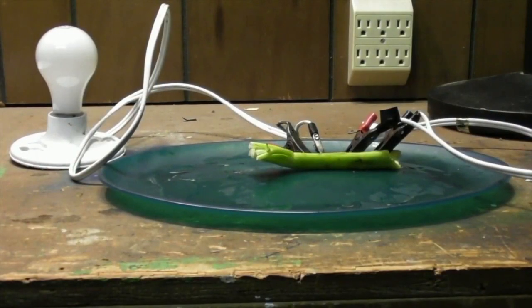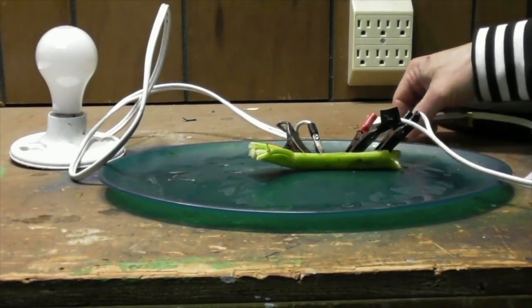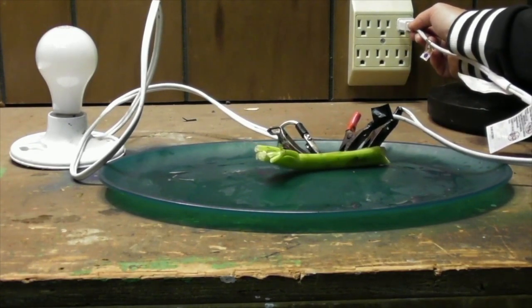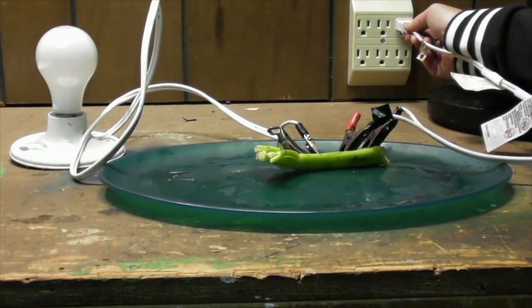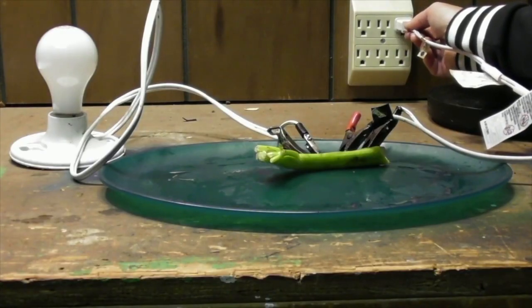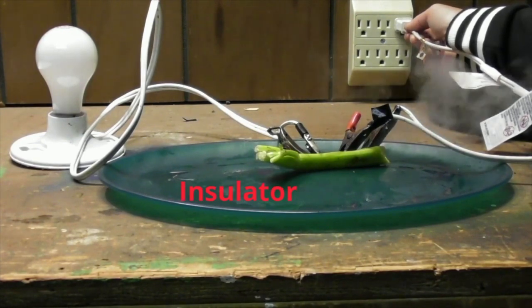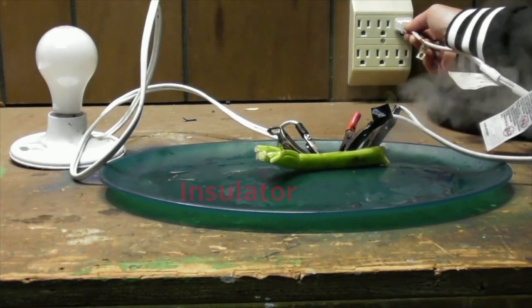How about celery? It kind of tastes salty. Maybe it has enough salt in there. I plug it in. And well, you can see for yourself. Nothing really happens. Well, it does start smoking a little bit. So let's see what happens with the celery with 110 volts going through it. Smoking. But it is an insulator. It's kind of cool looking though.